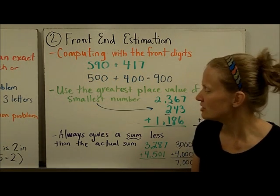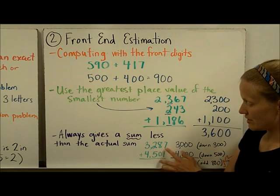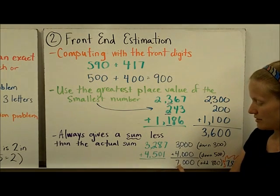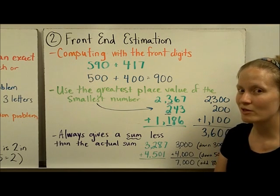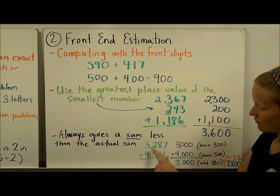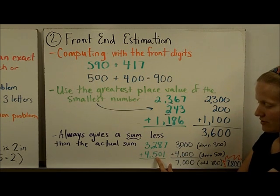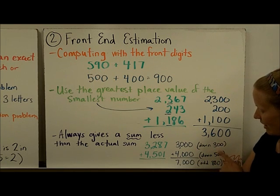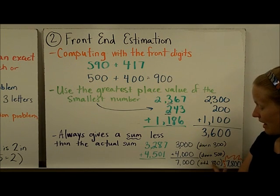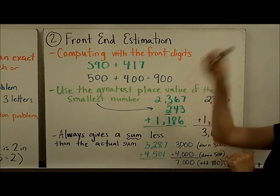An interesting thing about front-end estimation is that it always gives a sum less than the actual sum. For example, these two numbers change to 3,000 and 4,000 for an estimate of 7,000. When I go back and refine my estimate — meaning make it a bit closer and more exact — I notice that going from 3,287 to 3,000 went down about 300, and going from 4,501 to 4,000 went down about 500. Altogether I went down about 800, so to get a more refined estimate I add 800 back to get 7,800. That's called refining your estimation.